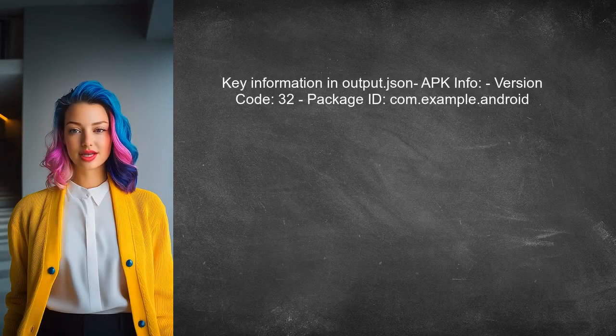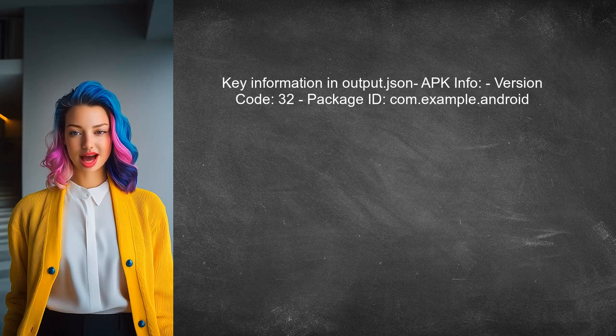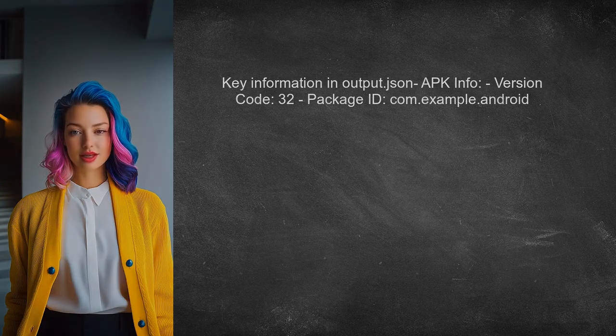The output JSON file also includes information about the APK's version code and package ID. This information can be useful for tracking builds and managing versions.